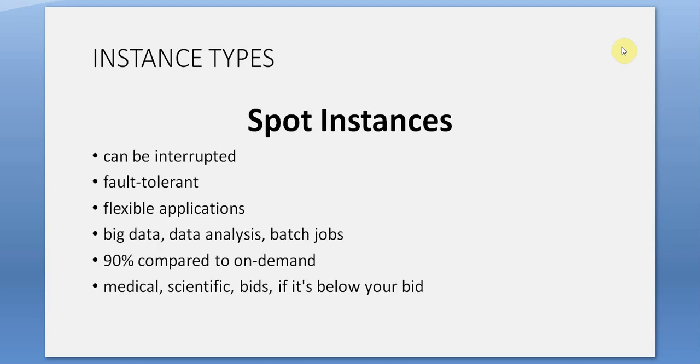Spot Instances: can be interrupted. Best for fault-tolerant, flexible applications such as big data analysis and batch jobs. You can save up to 90% compared to on-demand. Also used for medical and scientific computing. You place a bid — if your bid is low and hasn't reached the threshold, you save money.